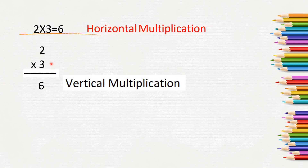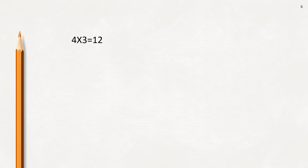Let's solve some multiplication sums. What is 4, three times? Yes, 4 three times is 12. That means you are adding the number 4 three times: 4 plus 4 plus 4 will be 12. In the same way, in the multiplication statement you write it as 4 into 3, which is equal to 12.